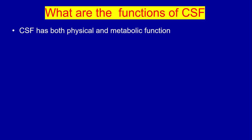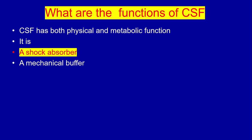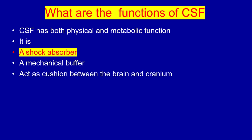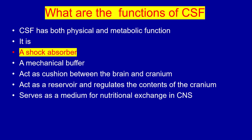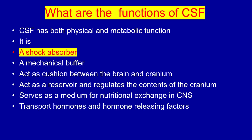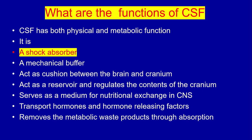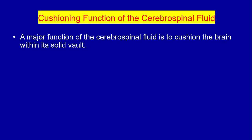CSF acts as a cushion or buffer for the brain. What are the functions of CSF? CSF has both physical and metabolic functions. It is a shock absorber and mechanical buffer, acts as a cushion between the brain and the cranium, acts as a reservoir, and regulates the content of the cranium. It serves as a medium for nutritional exchange in the CNS, transports hormones and hormone-releasing factors, and removes metabolic waste products through absorption.